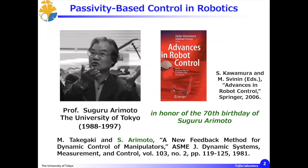To begin with, let me introduce a father of passivity-based control in robotics. His name is Professor Suguru Arimoto. He was a professor at the University of Tokyo. He published his pioneering work in the ASME Journal of Dynamic Systems, Measurements, and Control in 1981.